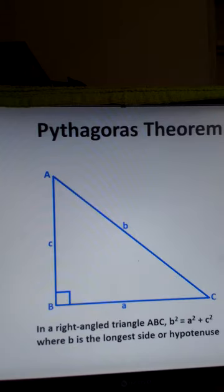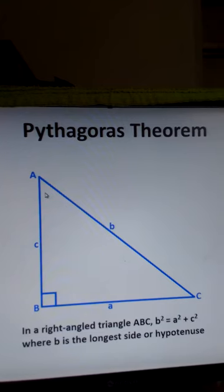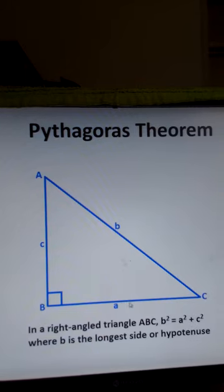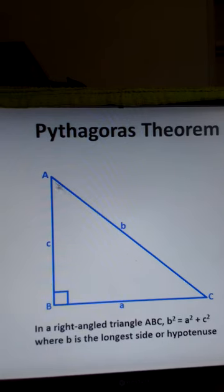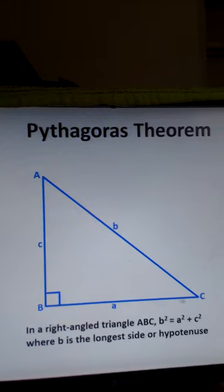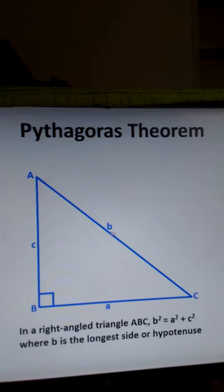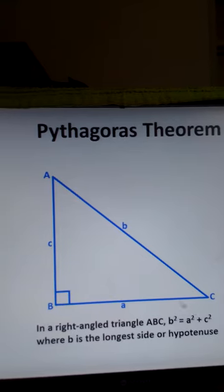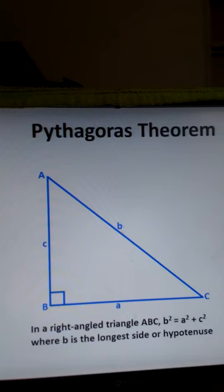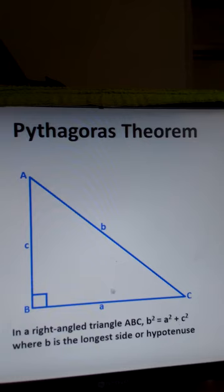Next is the Pythagorean theorem, which involves a right-angled triangle. We have triangle ABC with a right angle at B, with sides A, B, and C. The longest side is called the hypotenuse — B is the hypotenuse. Pythagorean theorem states that the square of the longest side equals the sum of the squares of the other two sides: B squared equals A squared plus C squared.